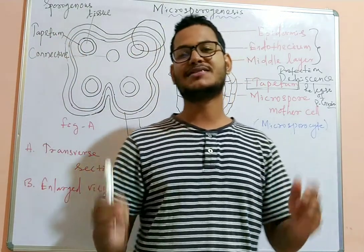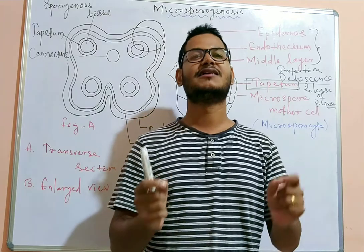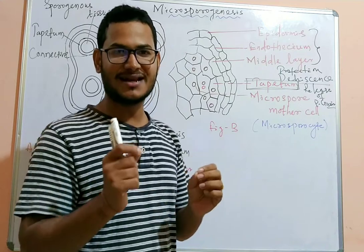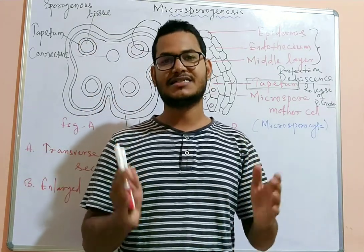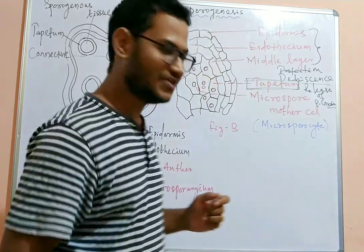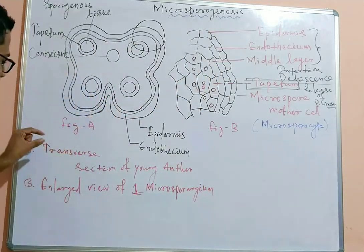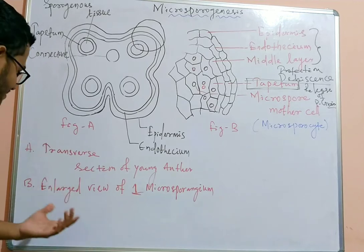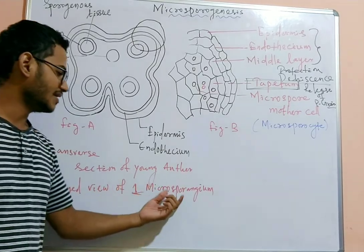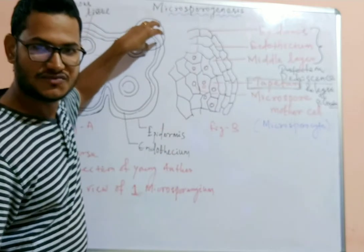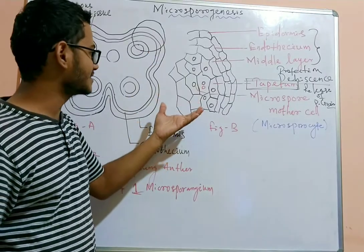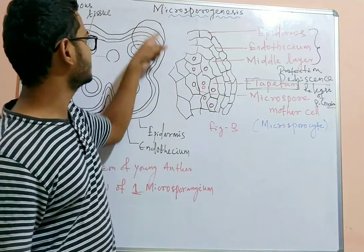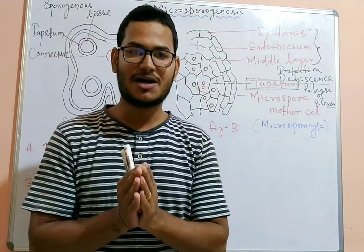Welcome to Shem's Biology. I am Chinmay and today we will discuss about microsporogenesis — how pollen grains are formed inside the anther. We will look at two figures: Figure A represents a transverse section of a young anther, and Figure B shows an enlarged view of one microsporangium, representing the detailed structure of that region.